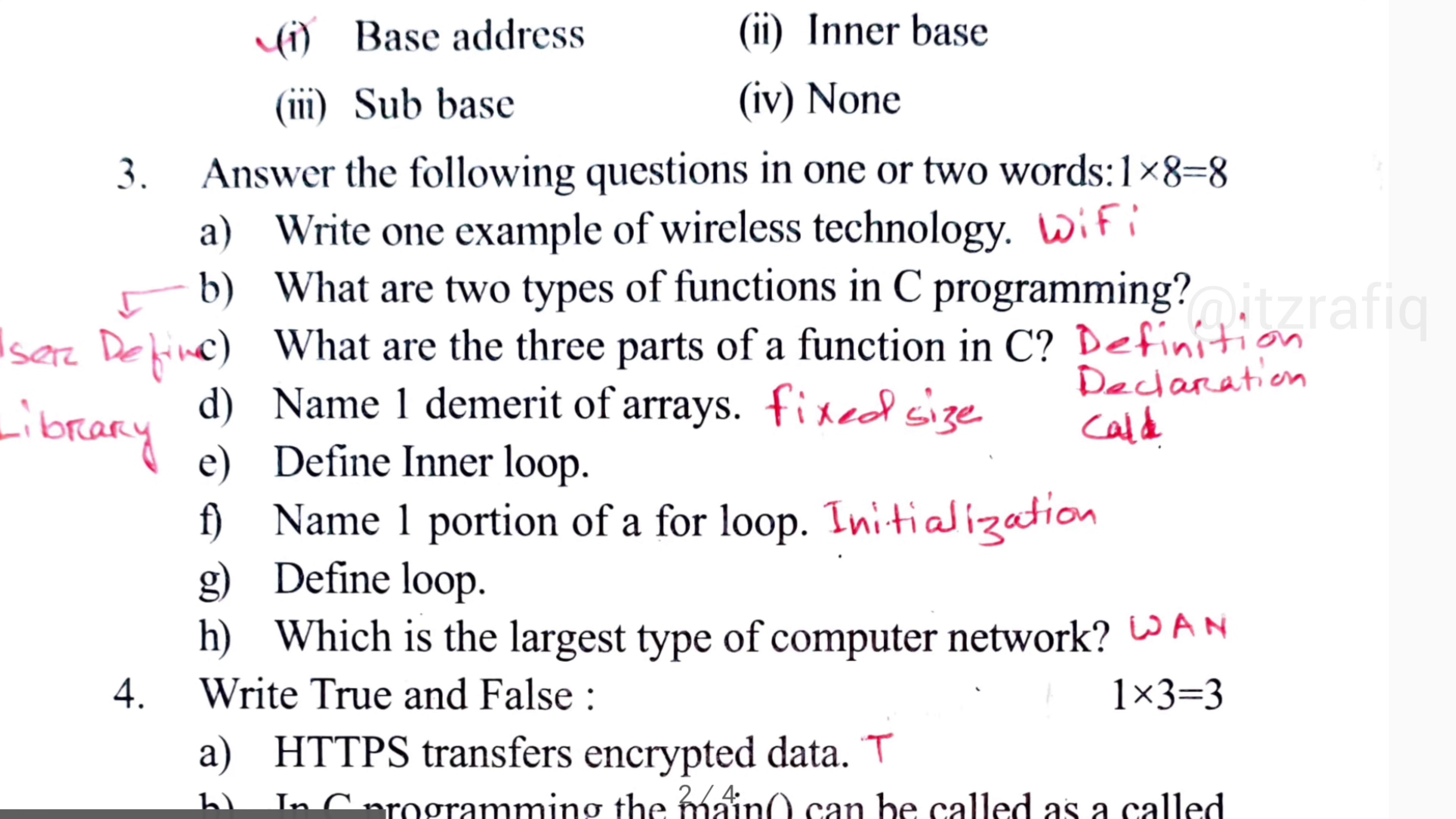Number B, what are the two types of function? It will be user-defined function and library function. Then number C, three parts of a function: it's declaration, call, and definition.